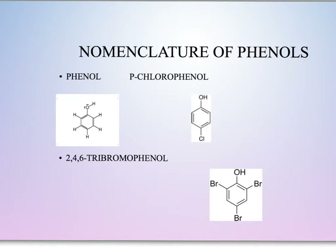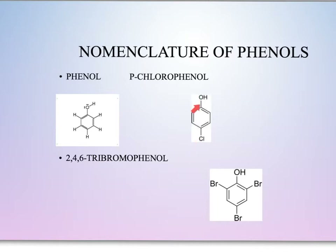Moving on to phenols — the first thing we need to do is identify a phenol. Remember, the phenol is going to be that benzene ring with the OH attached. Anytime you see that, the compound is a phenol. Anything that comes off the ring in addition to the OH needs to be named. The OH occupies carbon number 1. If we have a substituent coming off carbon 4, that puts it in the para position — we discussed that earlier in our videos. So we would call this para-chlorophenol, or you could call it 4-chlorophenol.